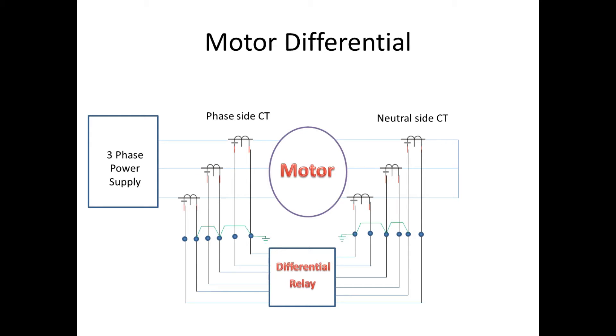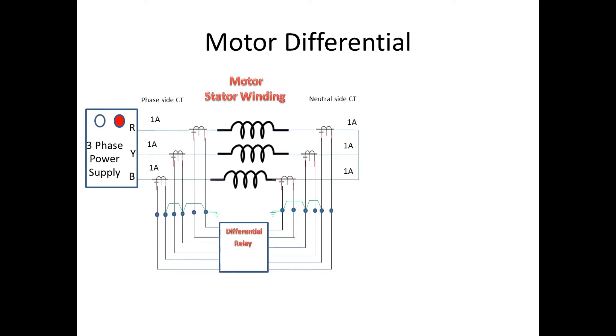Now we can see a small demo for differential protection. When we give supply to the motor, it starts to draw current from the source. Here, the phase side current has to take the path through the neutral side end only. So both CTs will have equal current. Since both have equal current, the relay will not give a trip.